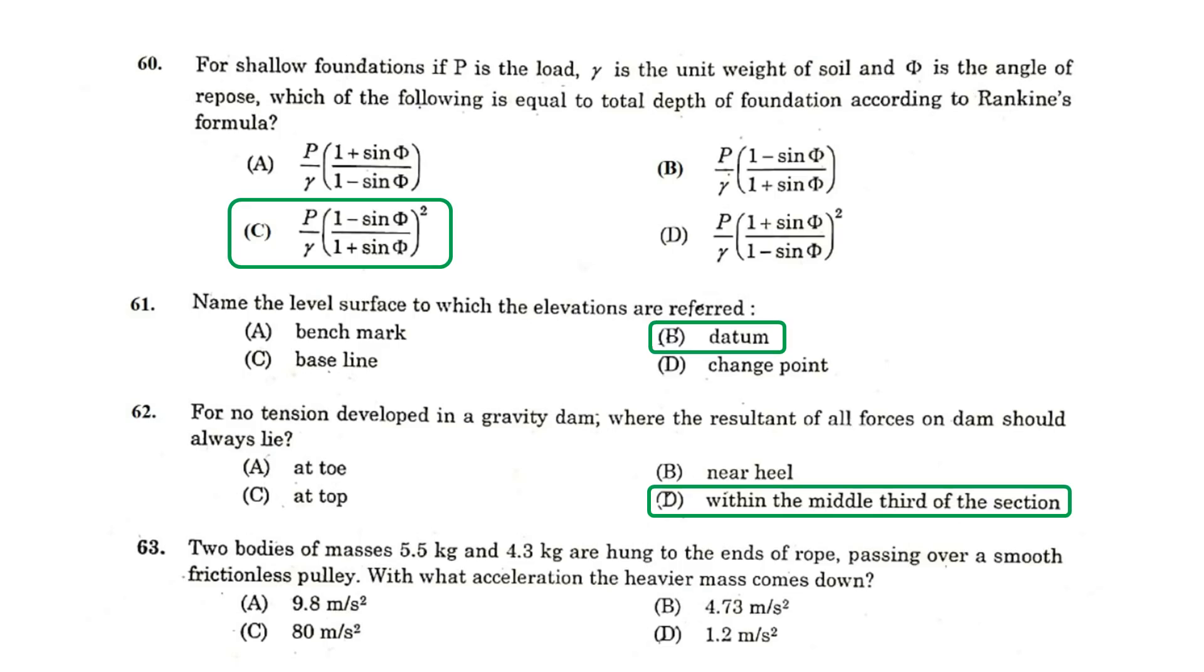Two bodies of masses 5.5 kg and 4.3 kg are hung to the end of a rope, passing over a smooth, frictionless pulley. With what acceleration the heavier mass comes down? 1.2 m per second square.